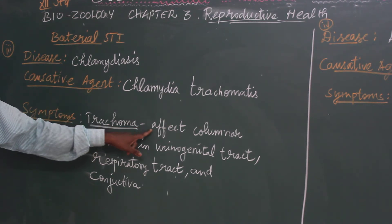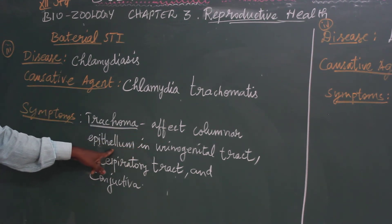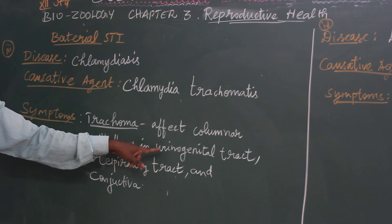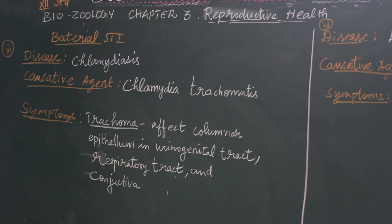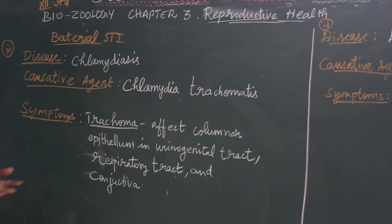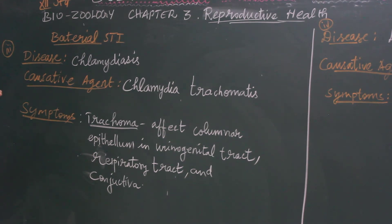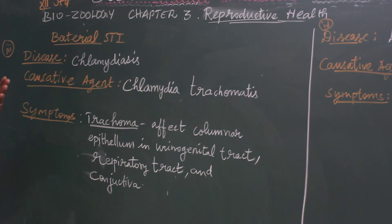How does it affect our tissues? It affects the columnar epithelial cells in the urogenital tract. There are columnar epithelial cells present in the urogenital tract.